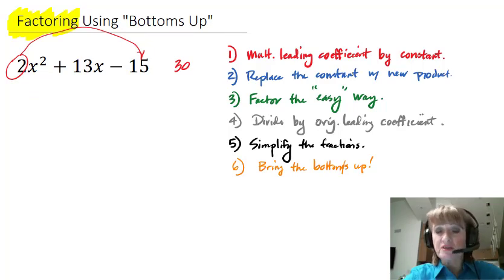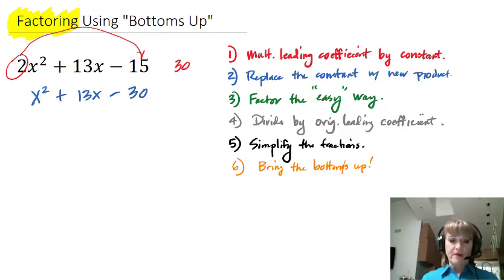Replace the constant with the product. In other words, let's write it again, and instead of 15 we're putting the 30. So we've got the blue step completed. Replace the constant with the new product. Let's move to the green step. We're going to factor this the easy way. The reason we get to do that is there's nothing sitting in front of x squared. There's no leading coefficient, or the leading coefficient is understood to be a one.